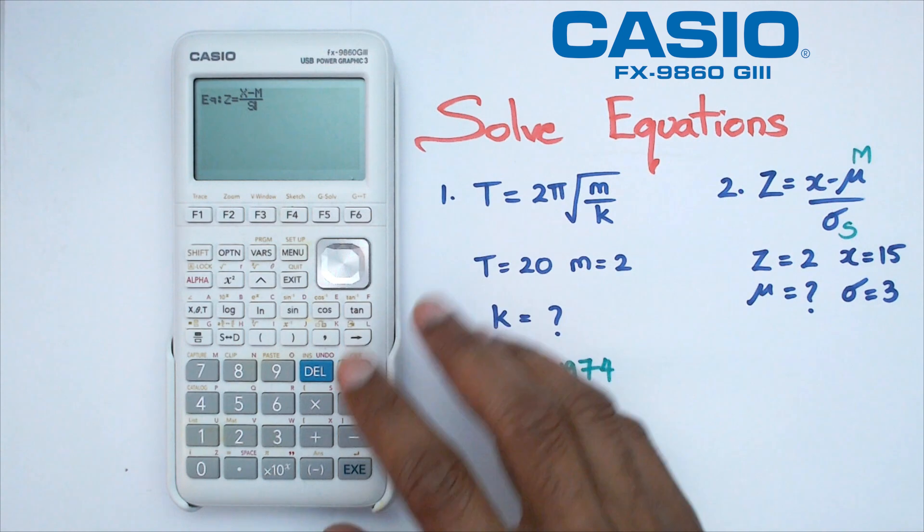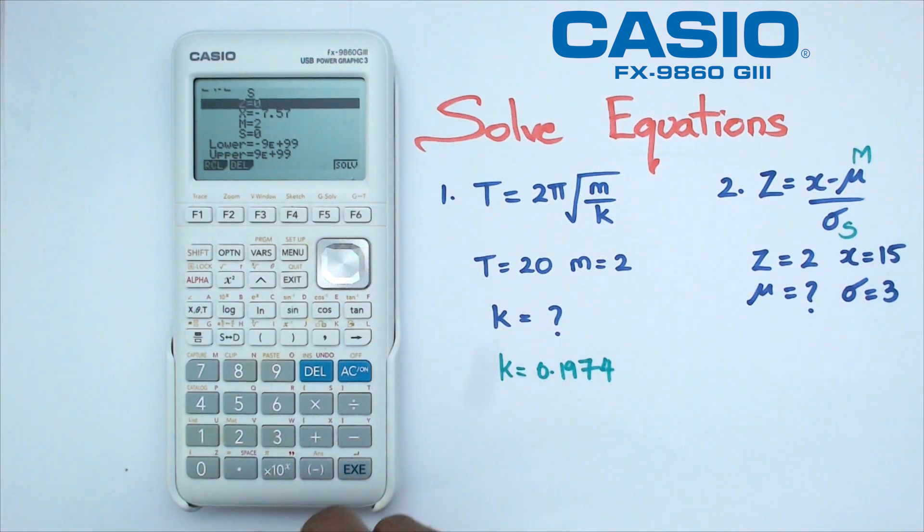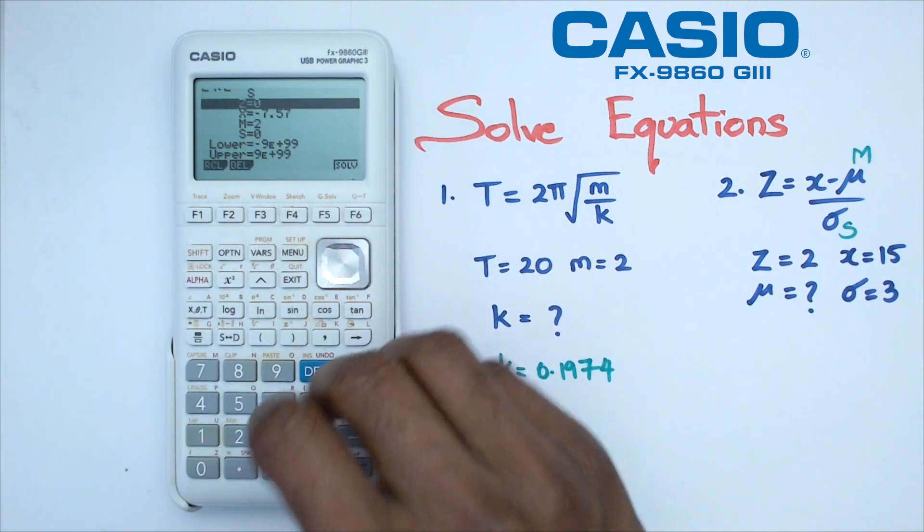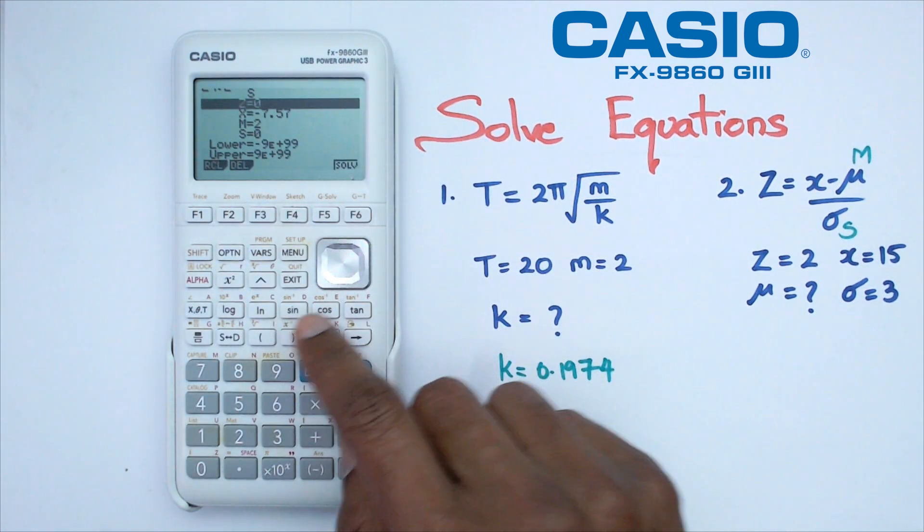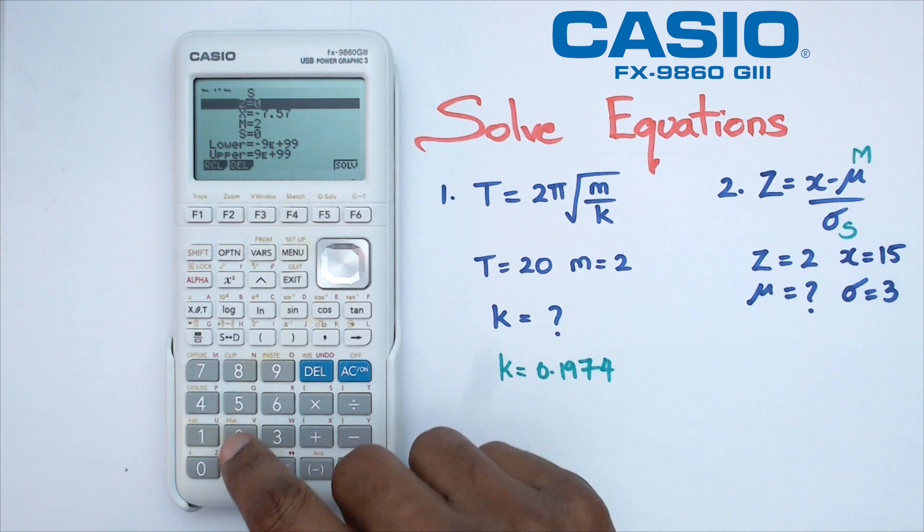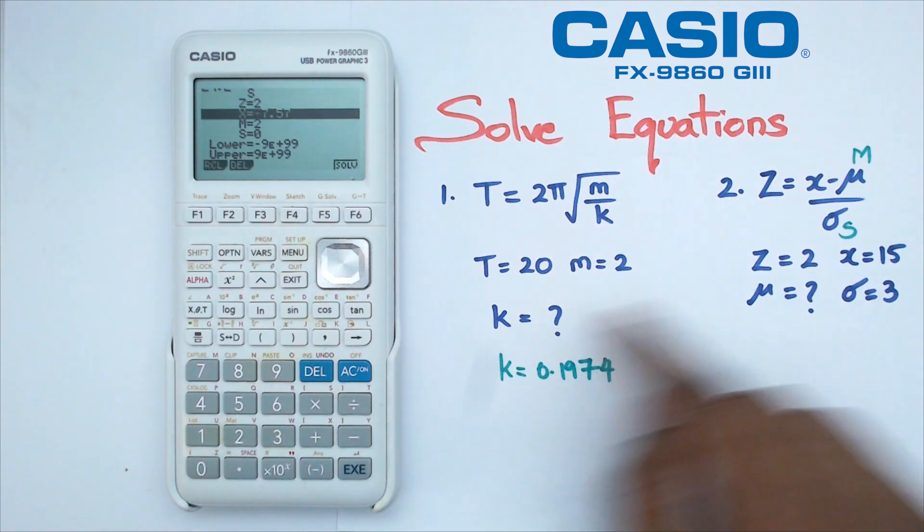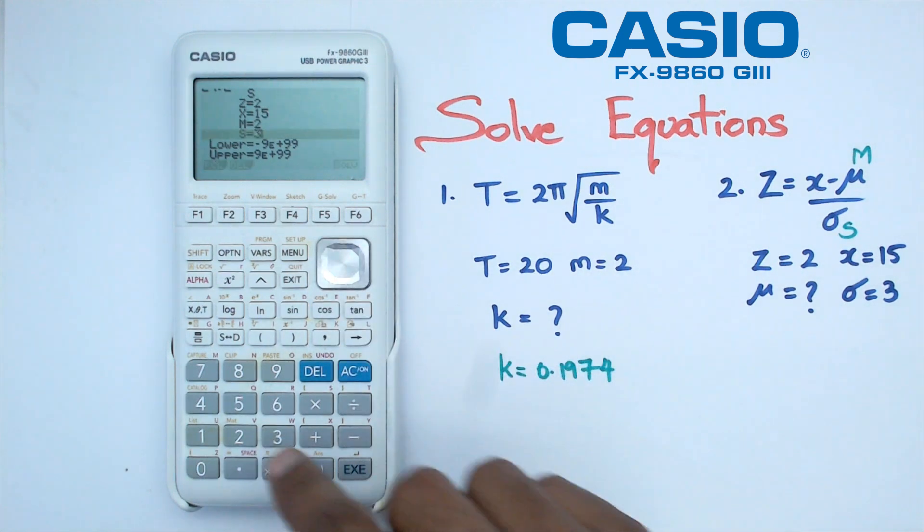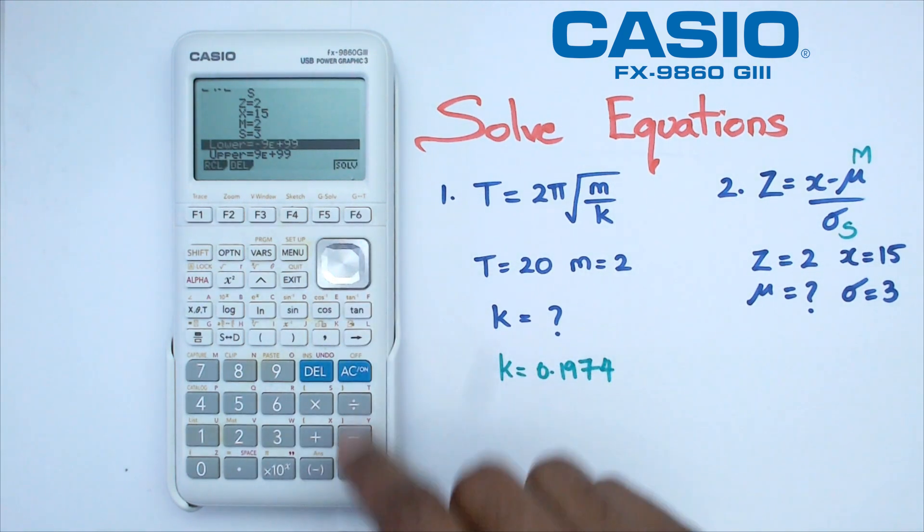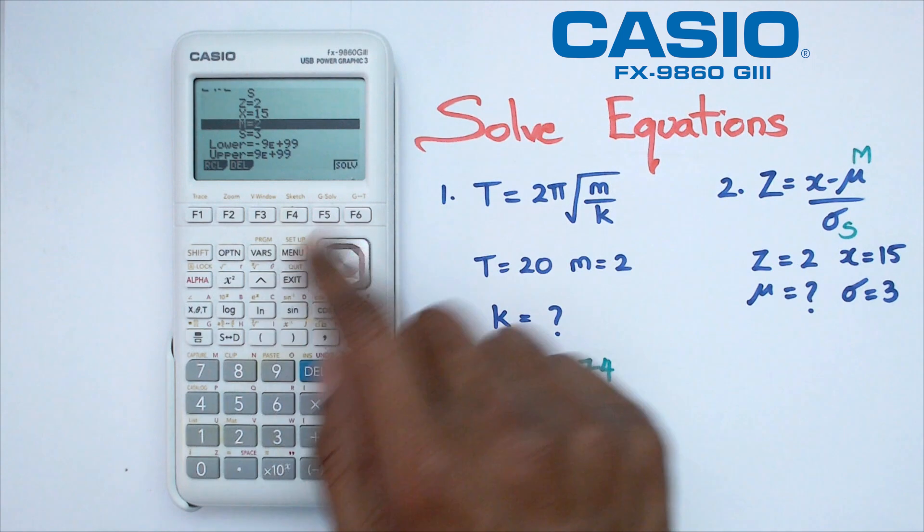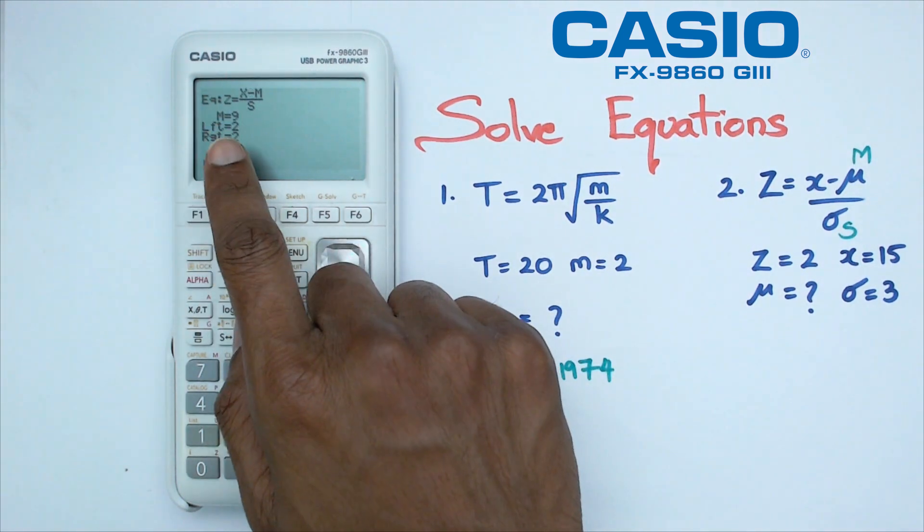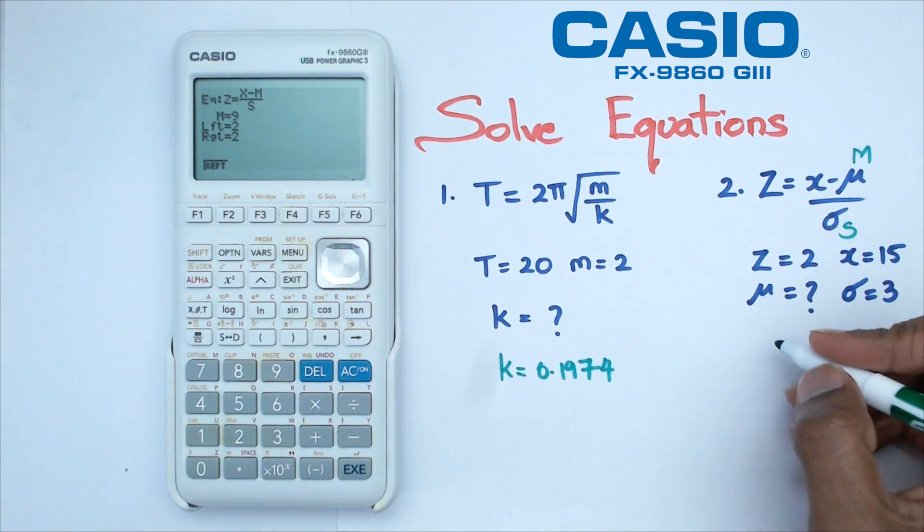This is particularly useful for normal distribution. As you can see, there's some of these numbers that are already there, so I need to get rid of them. Firstly, I'm going to go down to Z, and I'm going to put that as 2. X is 15. The mean, I don't know what it is. Standard deviation is 3, so I'm going to put that as 3. But if I go into M, and it says M equals 2. If I click on solve, that is now giving me a value of 9 for the M. That basically means the mu is equal to 9.